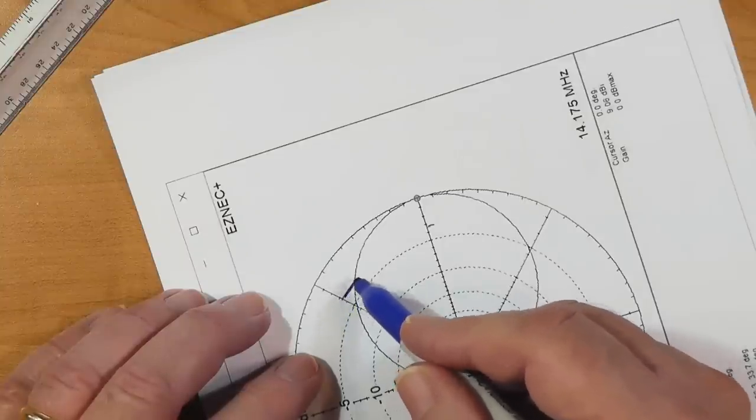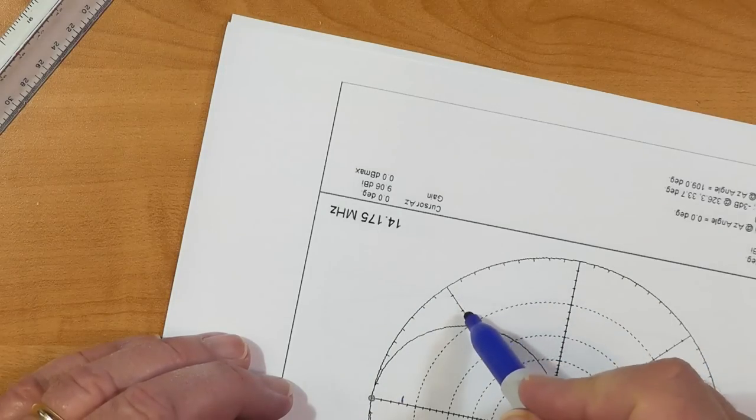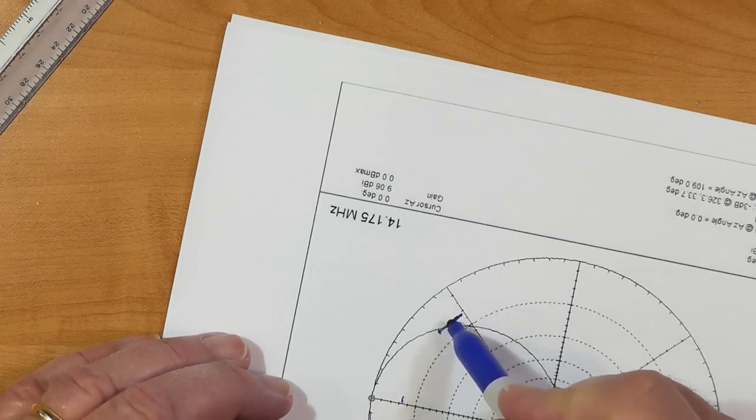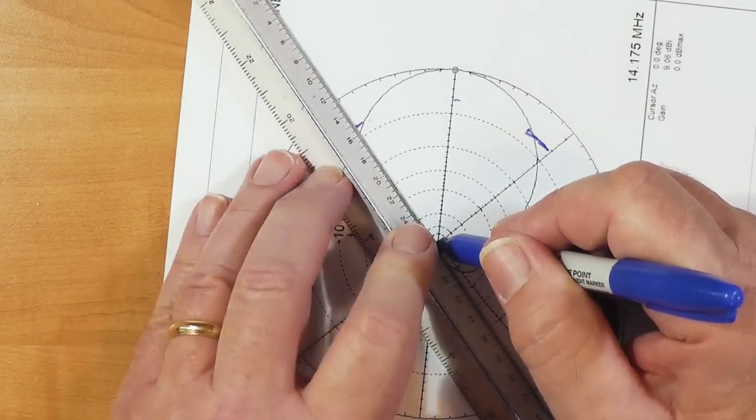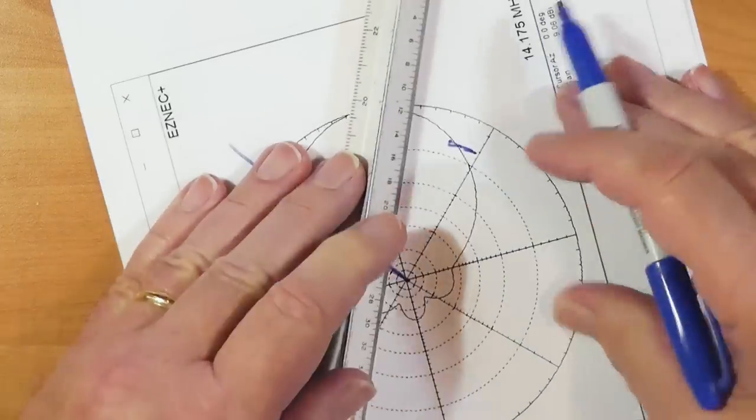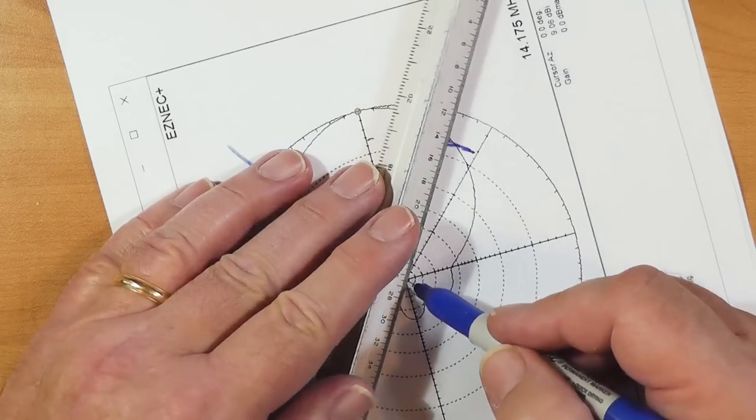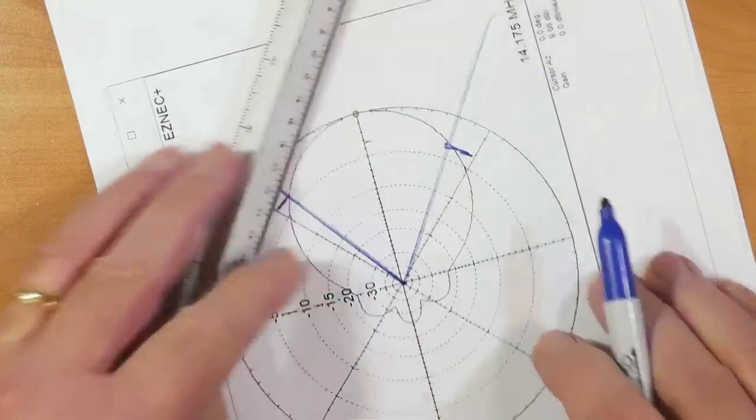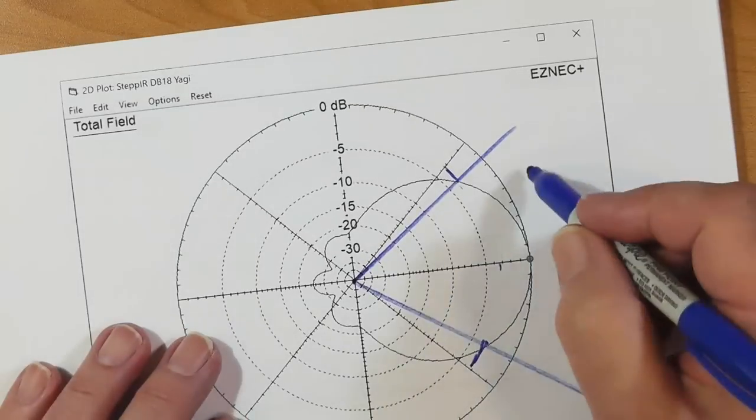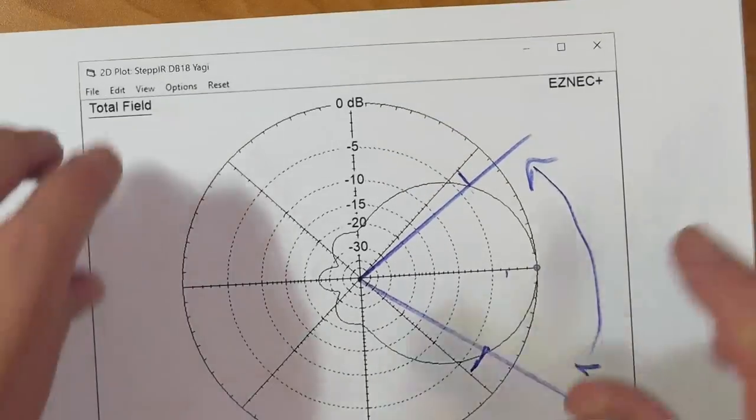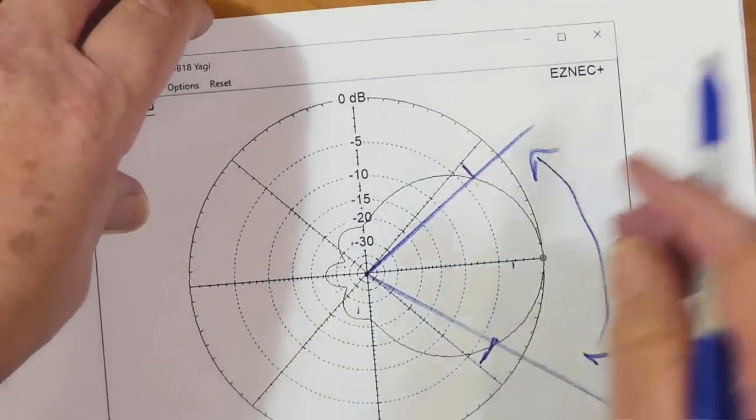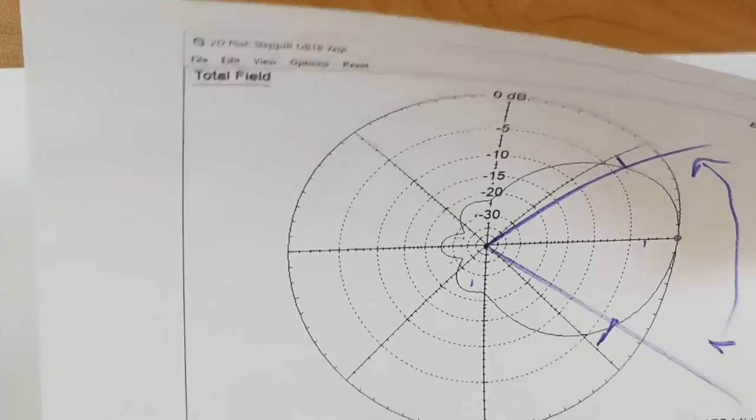So we want to look for the 3 dB point because we're going to define beam width, and beam width is arbitrarily defined as where it's 3 dB down. So we're going to go from here to here. This is looking down on the antenna. The antenna is right below. So this is the beam width of the antenna. It's actually pretty nice, pretty sharp. You've got very low side lobes here that just aren't going to matter a whole lot.